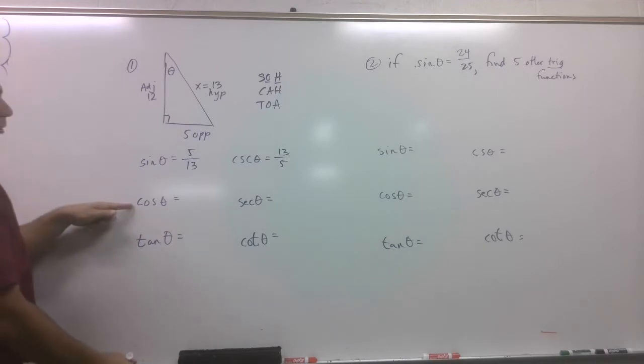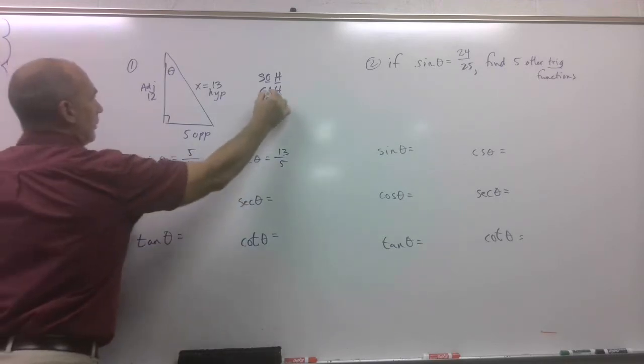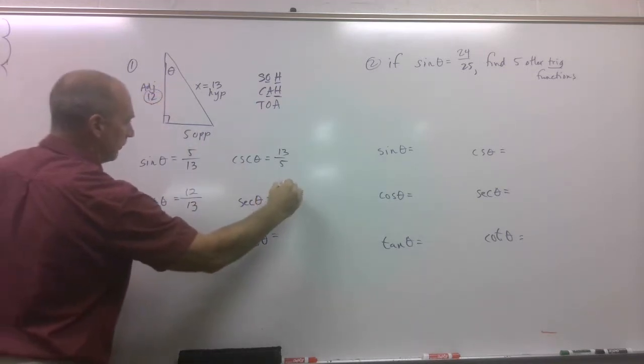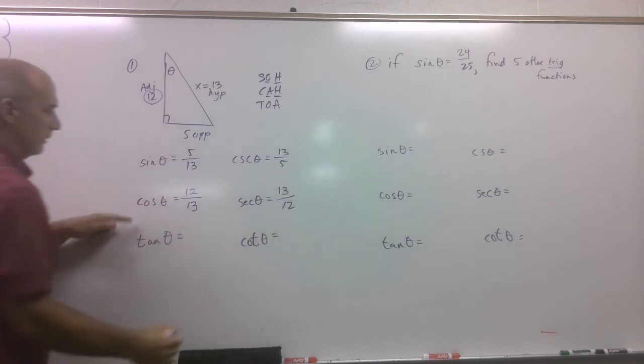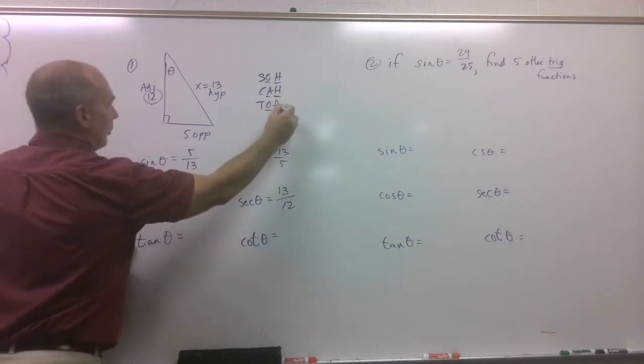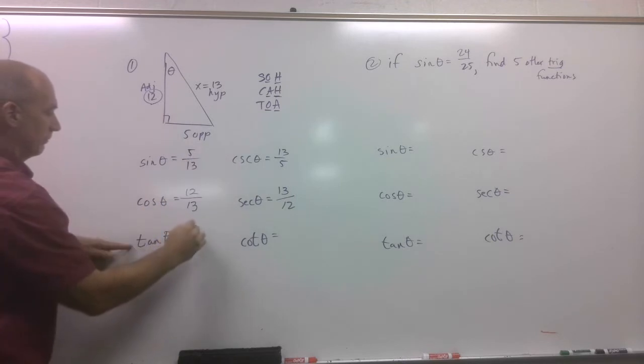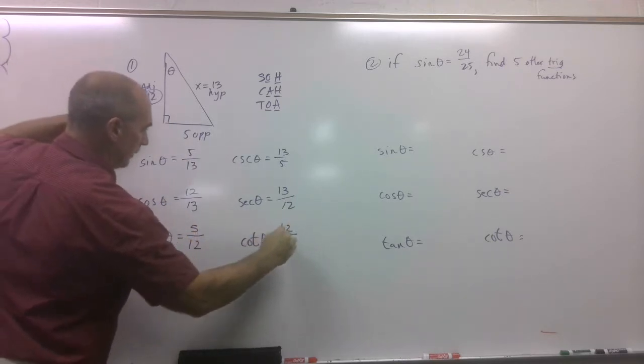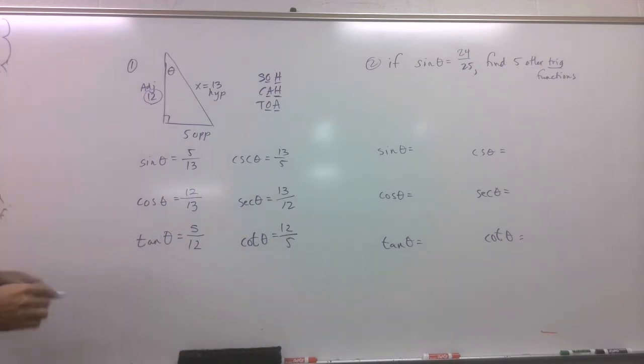Cosine. Cosine is adjacent over hypotenuse. So that'd be 12 over 13. Flip it for the other one. Tangent. Opposite over adjacent. Flip it for the other one.